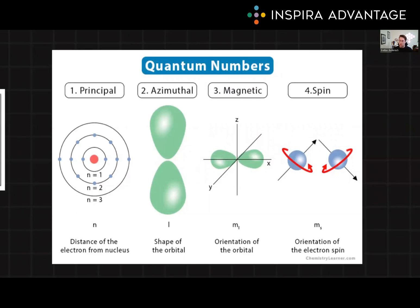So here's just a nice visualization to recap all that. n is telling us our energy, the size of our orbitals. Azimuthal, or angular momentum, is telling us the shape. Magnetic is telling us the orientation of that shape, and spin is talking about the electrons themselves, if they are spin-up or spin-down.